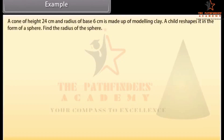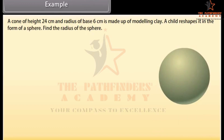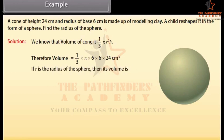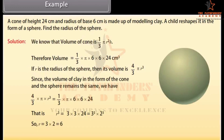A cone of height 24 cm and radius of base 6 cm is made up of modeling clay. A child reshapes it in the form of a sphere. Find the radius of the sphere. Volume of cone = (1/3)πr²h = (1/3) × π × 6 × 6 × 24 cm³. If r is the radius of the sphere, then its volume equals (4/3)πr³. Since the volume is preserved, solving gives r = 3 × 2 = 6. Therefore the radius of the sphere is 6 cm.